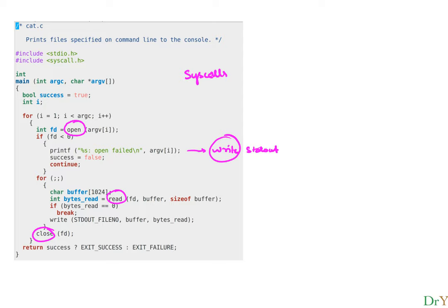Though we are calling various functions from the user program, in Unix there are upwards of 200 to 400 system calls, but they all really funnel into a single syscall function. This syscall function takes a call number and a variable number of arguments. For example, open passes one argument, read passes three arguments, and close passes one argument.